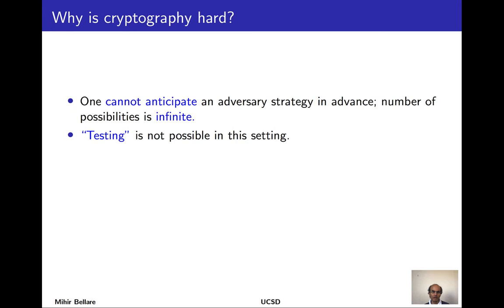What makes designing cryptographic algorithms more complex than a typical algorithm or software is that they have a goal of withstanding adversarial influence — they need to perform their functionality even in the presence of someone actively attempting to subvert them, but the way that entity attempts to subvert them isn't known in advance. The number of things it can try is effectively infinite. This makes it very hard to employ the typical validation method of testing, which is about throwing different inputs at the algorithm and making sure the output is what you'd like.